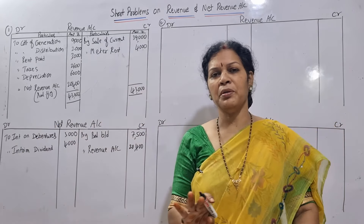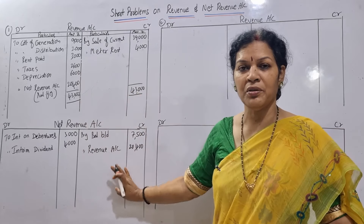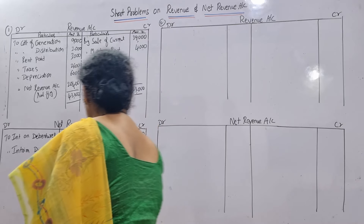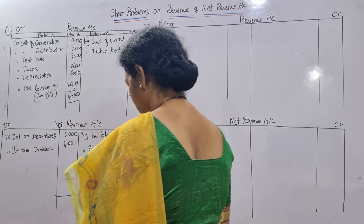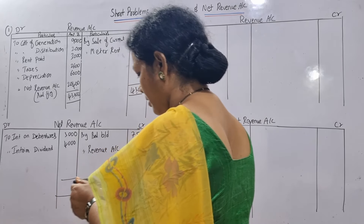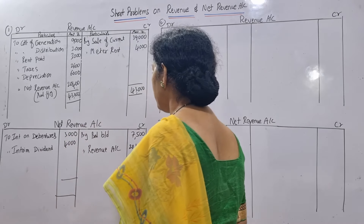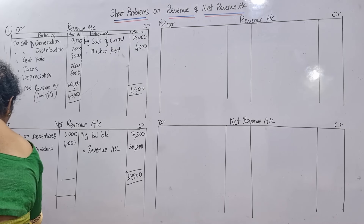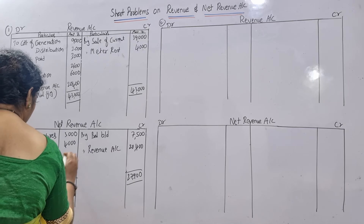Always remember, net revenue account has very few transactions: one is opening balance, one amount transferred from revenue account, and interest and dividend - that's all. We close this account too. Credit side total: 7,500 plus 20,400 equals 27,900. Debit side: 3,000 plus 4,000 equals 7,000. So 27,900 minus 7,000 equals 20,900. This balance is carried to the general balance sheet - 20,900.